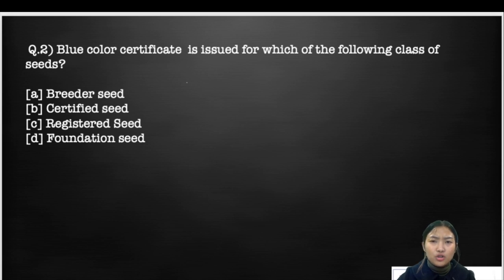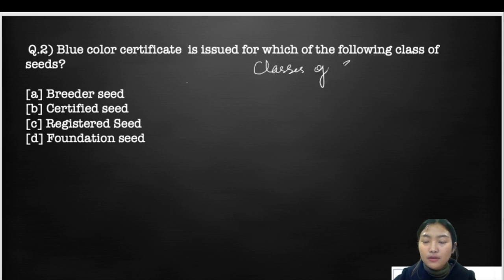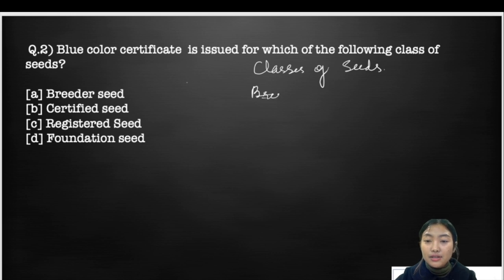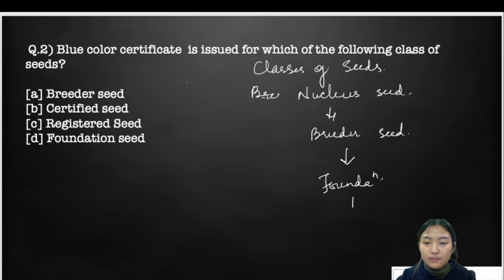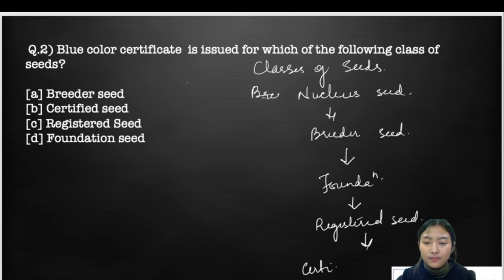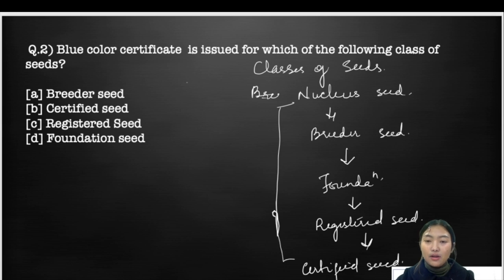Moving on to the next question: a blue color certificate is issued for which of the following seeds? Before answering, there's one important thing to discuss — the classes of seeds. There are five classes: first is nucleus seed, then breeder seed, then foundation seed, then registered seed, and finally certified seed.